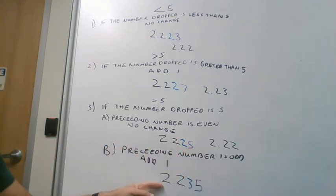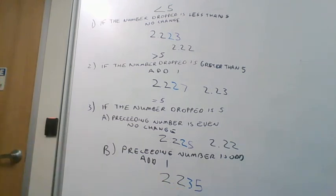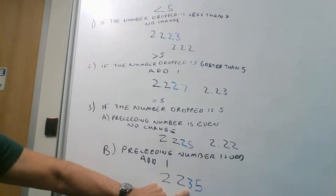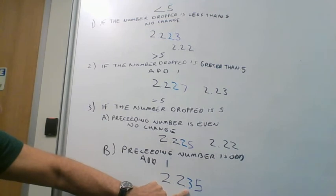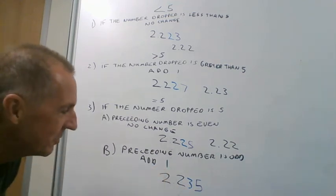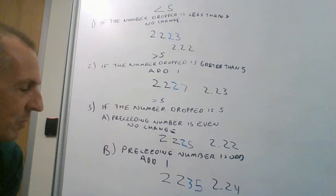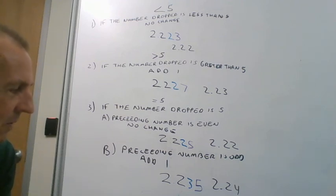Looking at the final number, 2.235, we want to round to three digits. Count out one, two, three, four — the purple number is our decision number. We ask: is this less than five, greater than five, or equal to five? It's equal to five, so now we ask: is the preceding number even or odd? Three is an odd number — one, three, five, seven, nine are our odd numbers — so we add one and round this to 2.24. Half the time we'll add a number and half the time it'll remain unchanged, which balances things out.